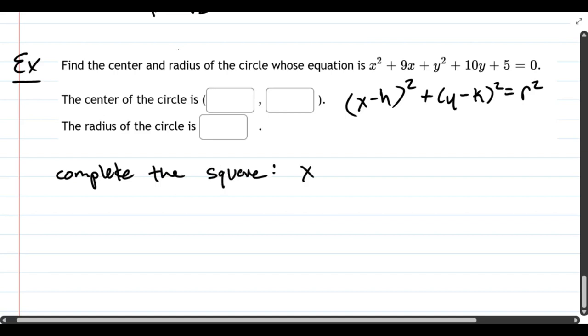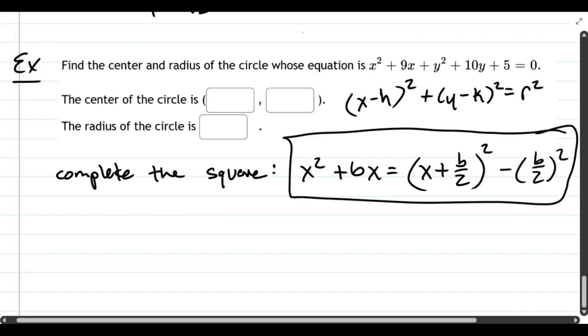So complete the square, we have x squared plus bx. You can rewrite that. You take half of b and you do x plus b over 2 squared minus just the b over 2 squared. Let's put this in a box, it's very important.